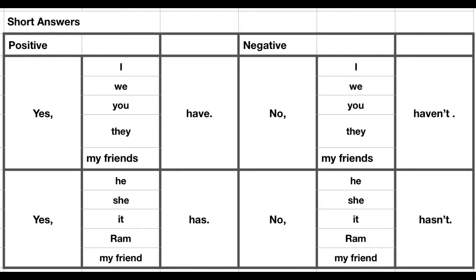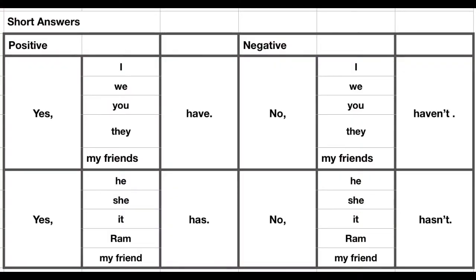Apart from this, we can also talk about short answers. We can say: Yes, I have. Or yes, we have. And for the negative: No, I haven't. No, we haven't. No, you haven't. And no, they haven't. Or no, my friends haven't got a car.